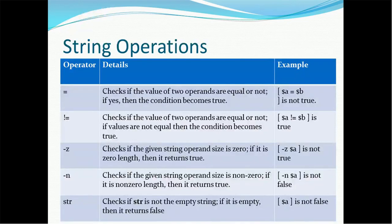Now for string operations, there are various operators such as equal to, not equal to, hyphen-z, hyphen-n, and str. Equal to checks if the value of the two operands are equal or not — if yes then the condition becomes true. Not equal to checks if the value of two operands are not equal — if values are not equal then the condition becomes true, otherwise it will become false.